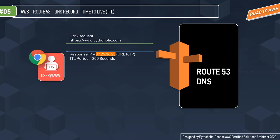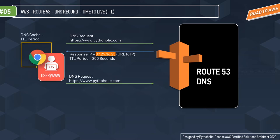The TTL is cached on the browser side, not on Route 53. For the next 200 seconds, the browser doesn't try to resolve the IP — it makes calls directly to the web application. Once the 200 seconds expire, it sends the request back to Route 53 and gets updated data. The response IP can change, for example from 37.25.36.252 to 247.21.3.21, because there can be multiple hosts for the same application. This ensures Route 53 is not overloaded with traffic.